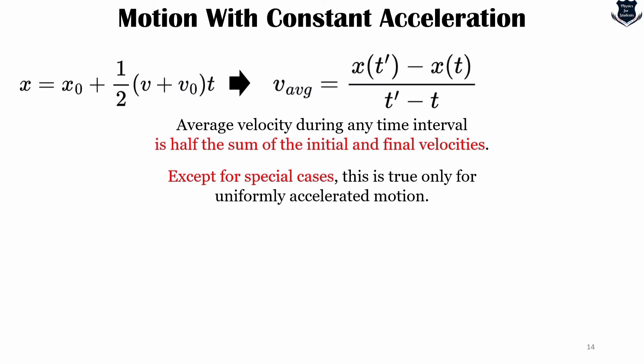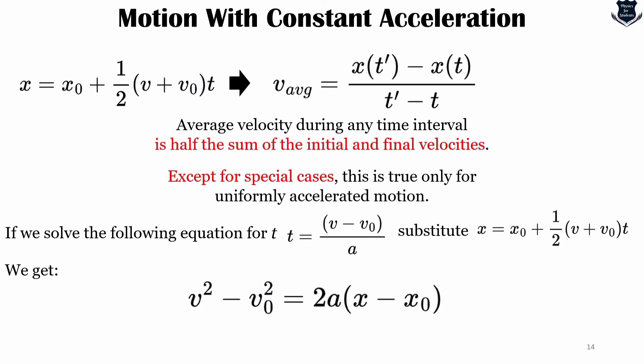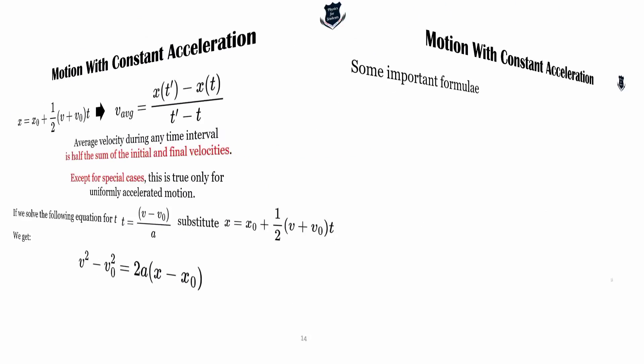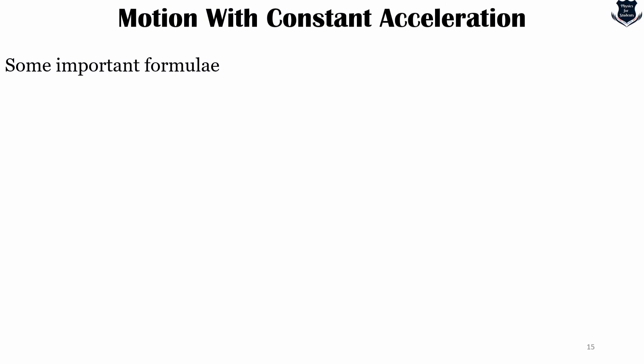Sometimes we are interested in knowing the velocity as a function of the position x rather than as a function of time t. If we solve this equation for t, t equals (v minus v₀)/a, and substitute the value into the position equation, we get something like this.